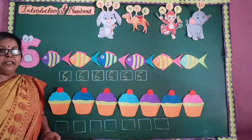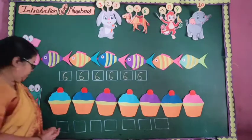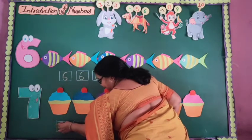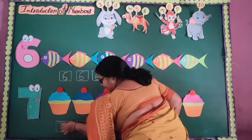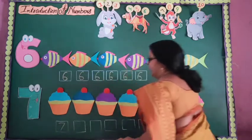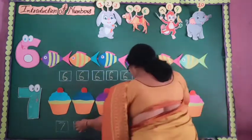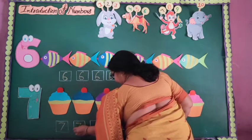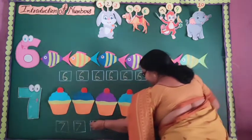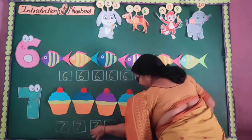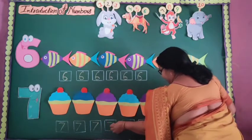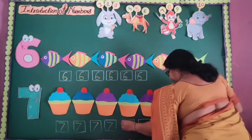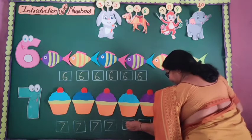Now, how to write number seven? So let's start. First of all, I draw a sleeping line, like this. After that, I draw a slanting line, like this. Draw a sleeping line, and after that, draw a slanting line.